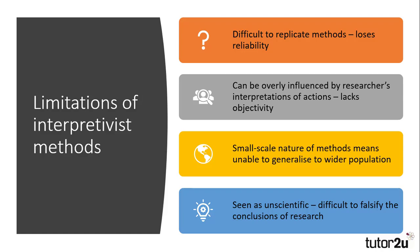A further limitation is that due to the in-depth nature, their research tends to be small-scale and focused on groups that may be seen as atypical. Therefore, it is difficult to generalise interpretivist research to the wider population. Finally, their approach is seen as being unscientific, particularly by the scientific community, as it is not able to be falsified. This means it is often rejected for the purposes of decision and policy-making. However, interpretivists would suggest that sociologists should be independent of government and that the role of sociology is to act as a commentary on society.